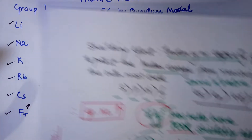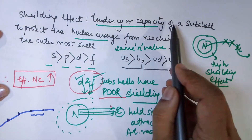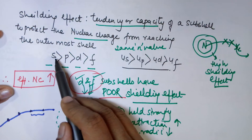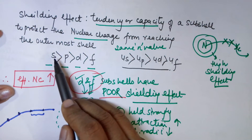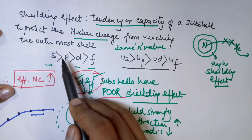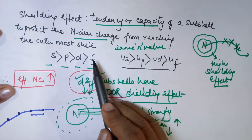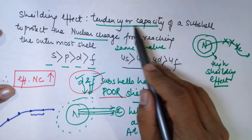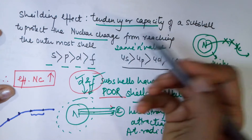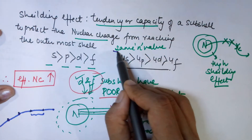To justify this fact, we need to know a property known as the shielding effect. The shielding effect refers to the tendency or capacity of a subshell to protect the nuclear charge from reaching the outermost shell. The S subshell has the highest shielding power, covering up the nucleus well so the nuclear charge is not felt much at the last shell. Going from S to P, the shielding effect is less; P to D, it is even less; and D to F has the least shielding effect. This increase in shielding order is only applicable for the same principal quantum number N — so 4S has greater shielding than 4P, which has greater than 4D, which has greater than 4F.